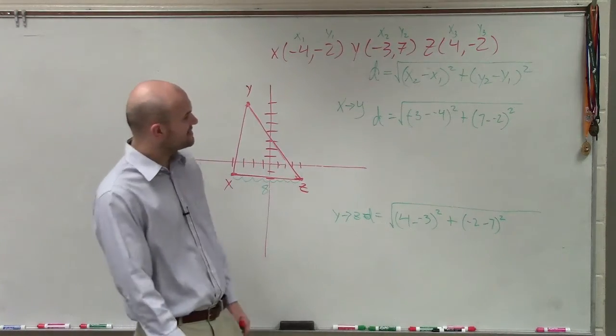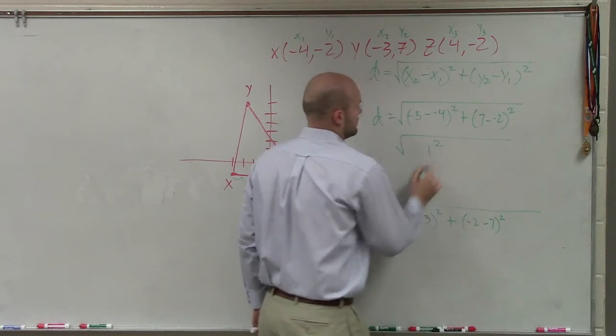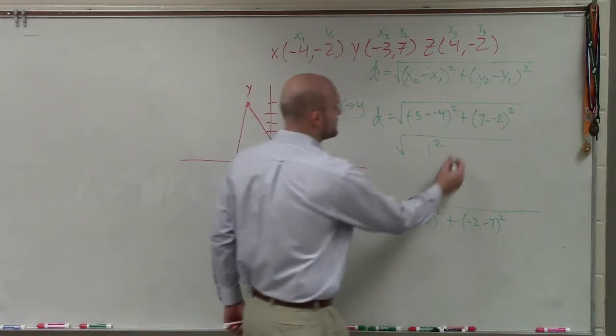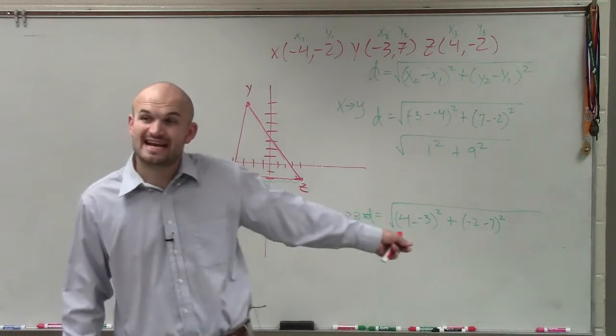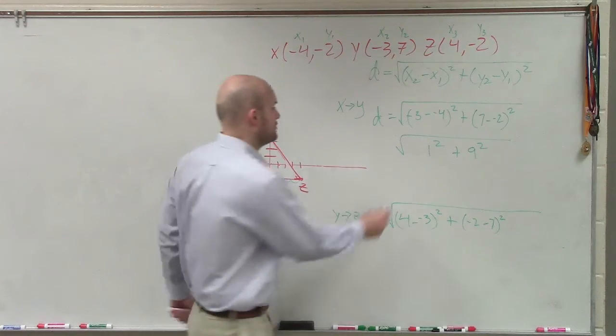So negative 3 minus negative 4, that's going to be square root of 1 squared. And 7 minus negative 2, that would be plus 9 squared. 9 squared is 81, plus 1 is 1. So I have the square root of 82.